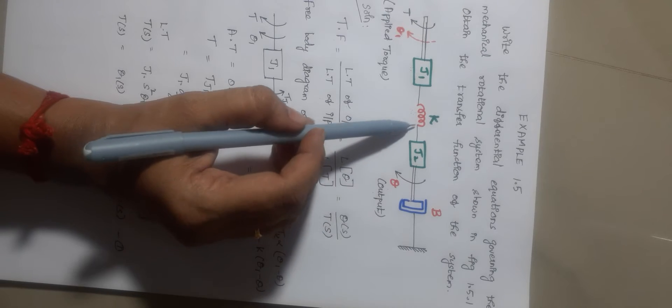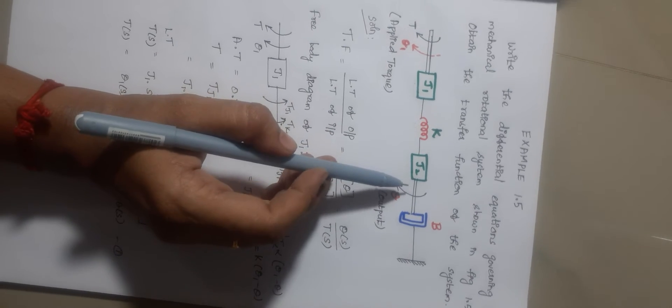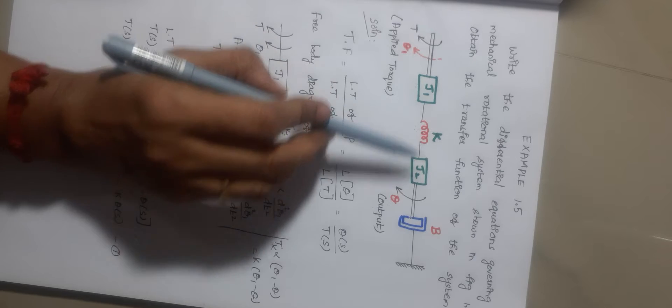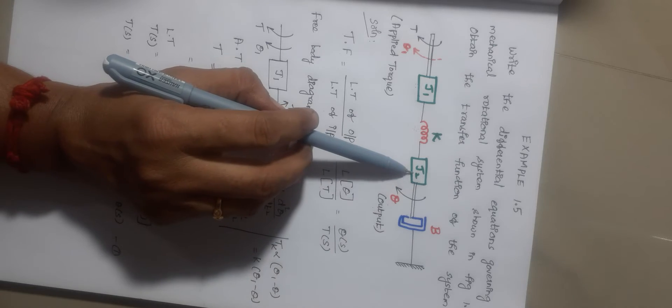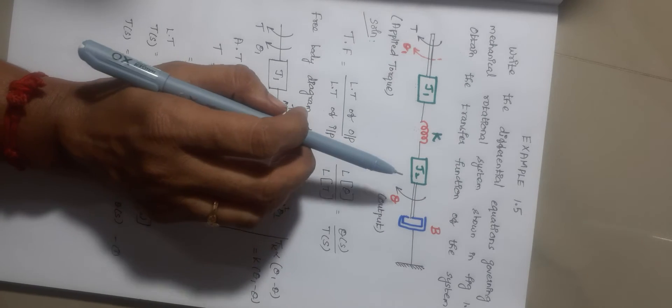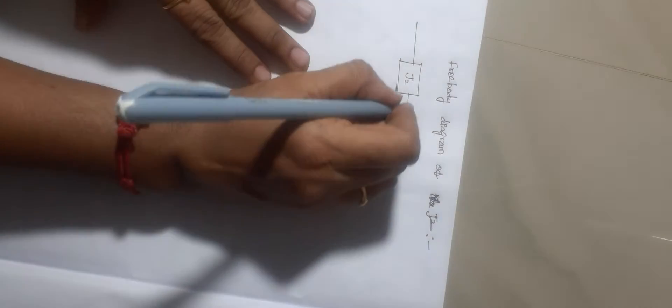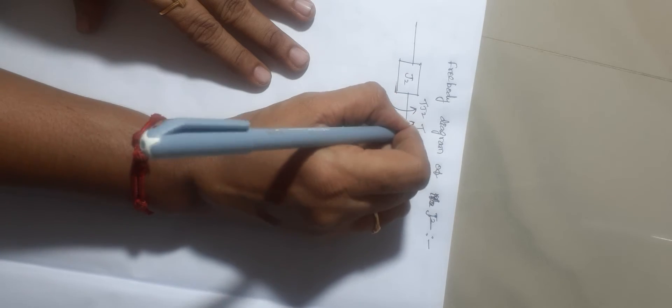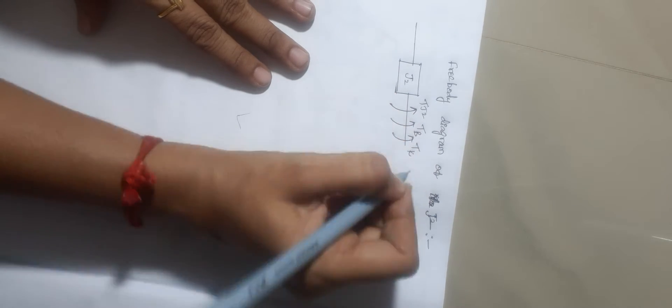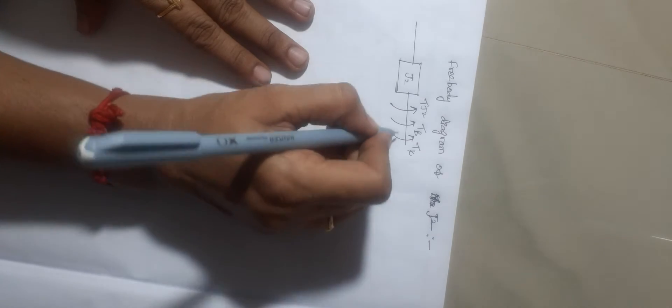Now we draw the free body diagram of mass J2. Counting the elements connected to J2: there are 2 elements directly connected (spring K and damper B), plus J2 itself produces an opposing torque — so totally 3 opposing torques: Tj2, Tb, and Tk. The angular displacement of J2 is theta. There is no directly applied torque on J2, only opposing torques.